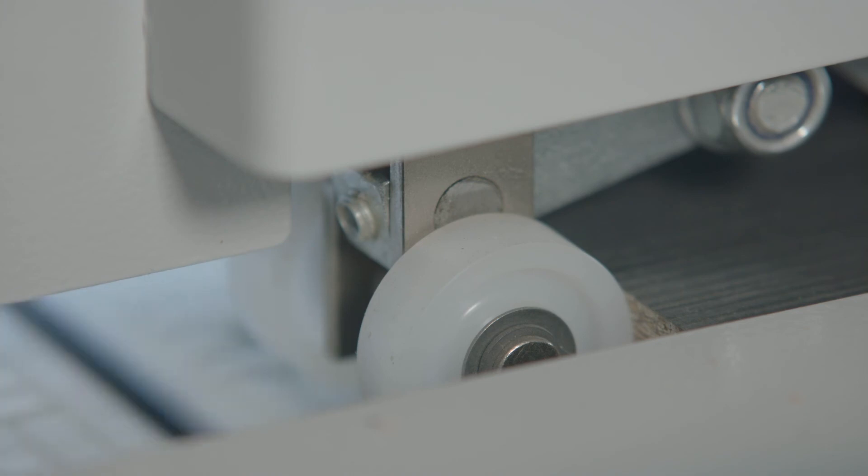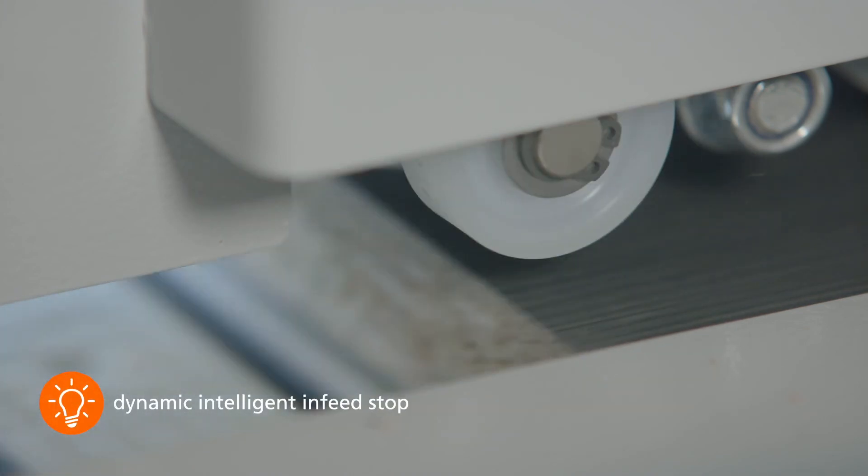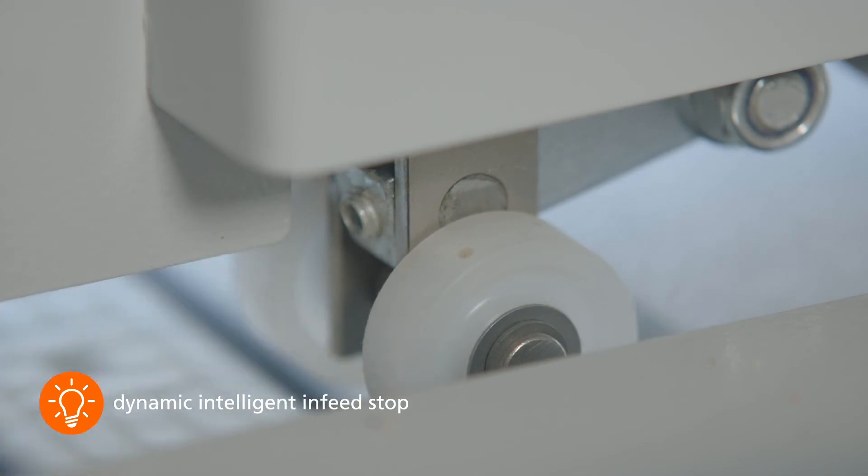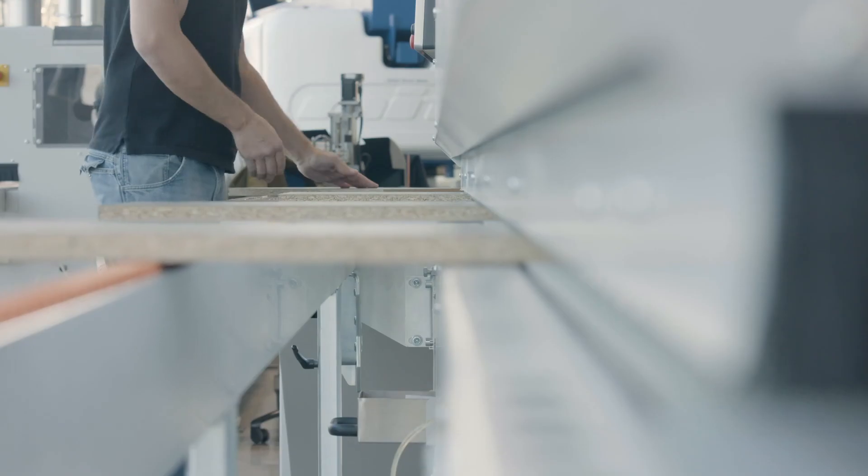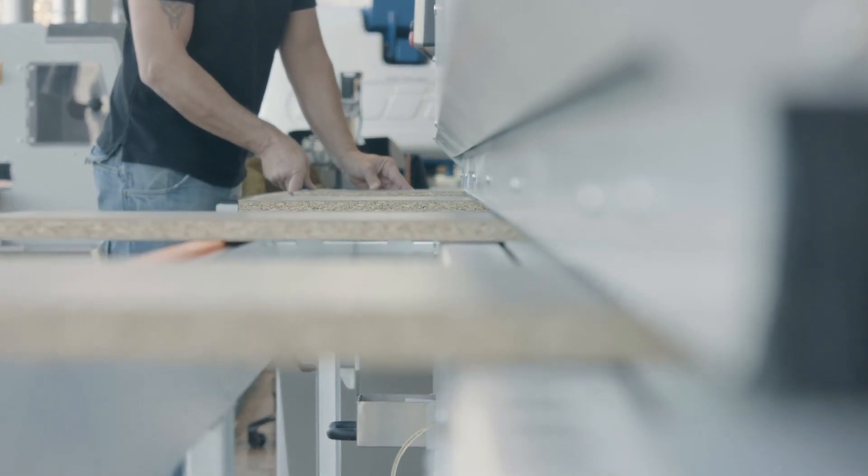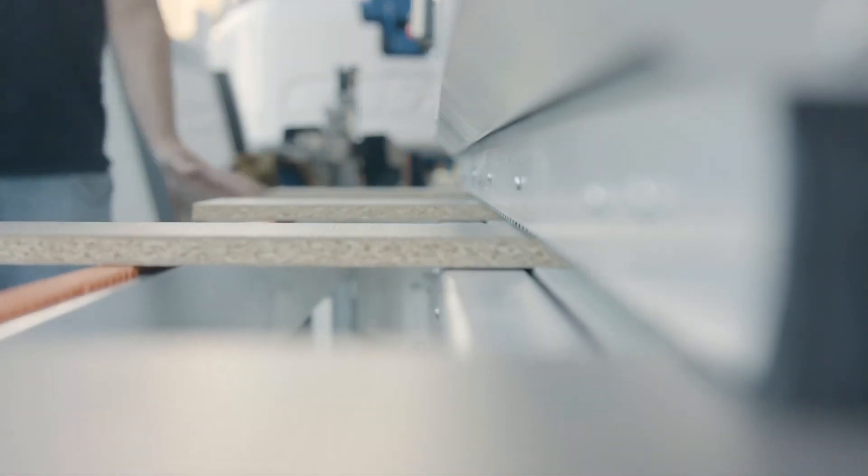The Sprint works with a dynamic locking roller, which enables the optimum workpiece sequence. It automatically blocks the machine infeed if, for example, glue or edges are missing, thus very effectively preventing operating errors.